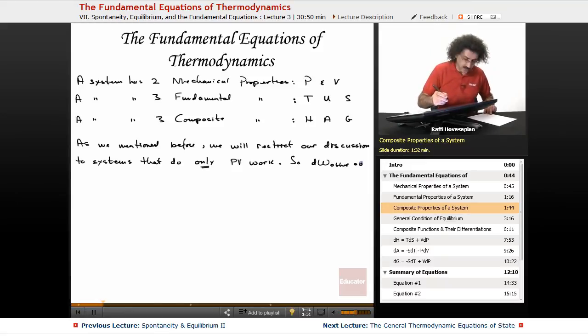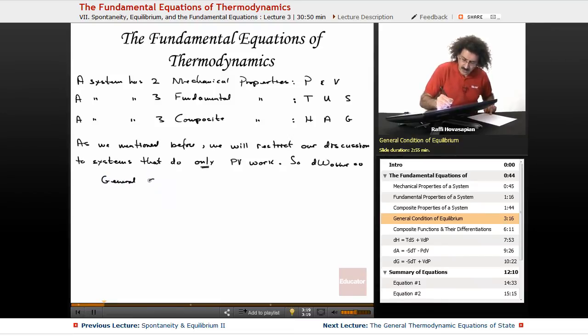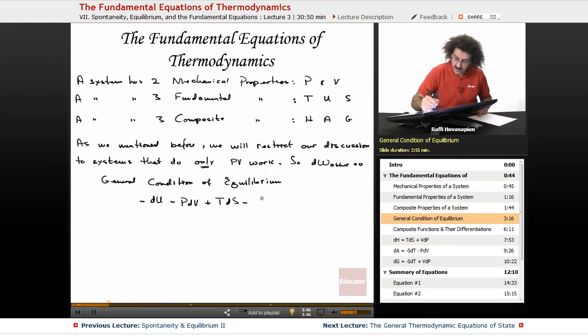Let's recall the general condition of equilibrium. We have minus dU minus P delta V plus TdS minus dw other is going to equal zero. And again, this is going to be zero for us. So we're going to have minus dU minus PdV plus TdS is equal to zero. Let's rearrange this a little bit and express it in terms of energy. We'll put the dU on the left. It's going to be dU equals TdS minus PdV.